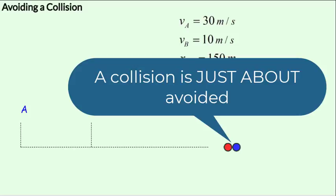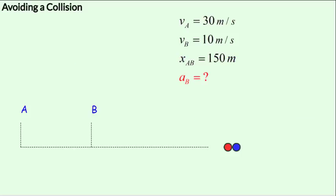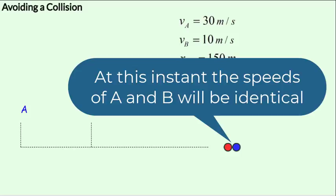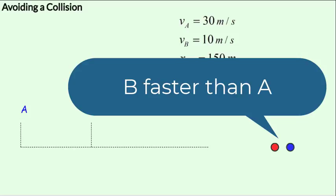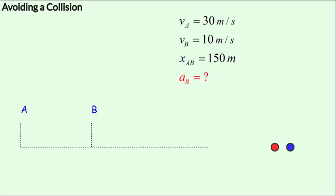At this point, the speeds of A and B would be identical. And now, since the speed of B increases above 30 meters per second, the gap between A and B would only grow further from this point on.